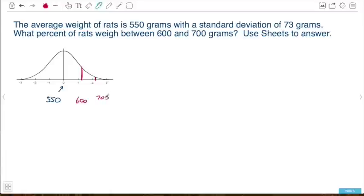Now I'm not exactly sure what the z-scores of these are, I'm not really interested in that. And what we're looking for is basically the area between those two lines or the probability that the weight is going to be between 600 and 700 grams.